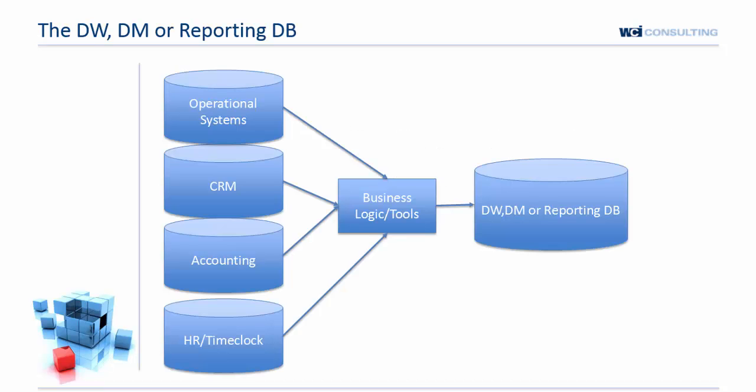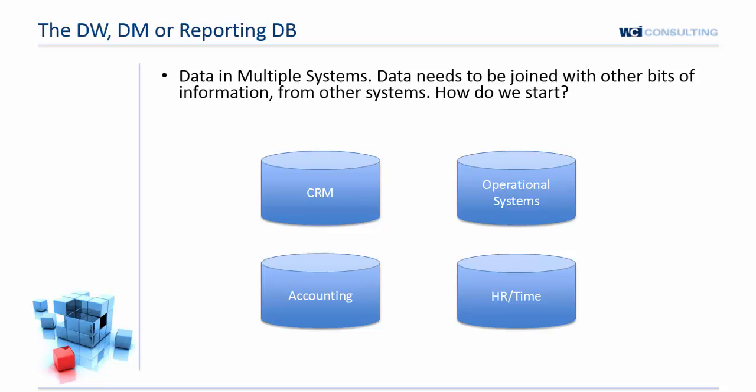Back to our diagram here, we have multiple systems all creating data. We need data from those systems to be consolidated so that we can take data and make information. The piece in the middle is we've got to take business logic and use tools to extract data from those source systems, and actually help merge, match, and apply that logic to the database where we can then do centralized reporting. We've got all of these areas — a CRM, operational system, accounting, HR — and we need to bring those together.